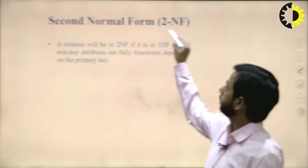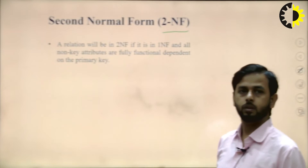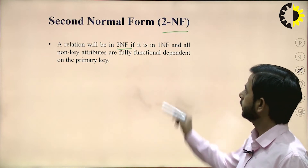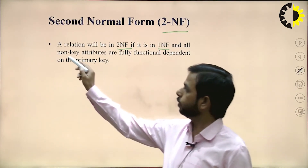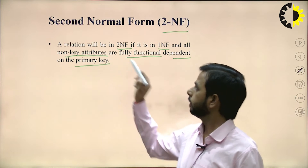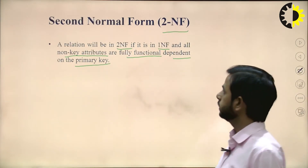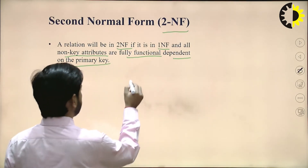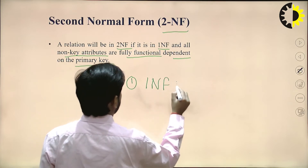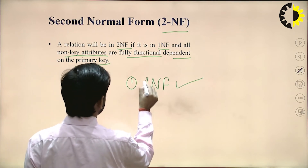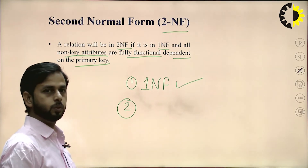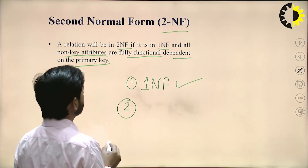Next, see the Second Normal Form. A relation will be in 2NF if it is in 1NF and all the non-key attributes are fully functionally dependent on the primary key.